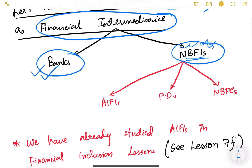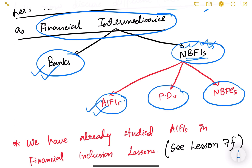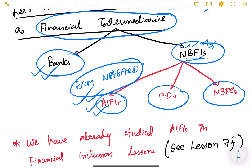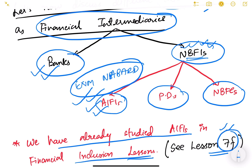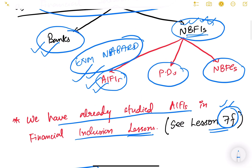NBFIs — non-banking financial institutions — are categorized into three types: All India Financial Institutions, then Primary Dealers, and NBFCs. All India Financial Institutions like EXIM, NABARD, SIDBI etc. we have already studied in lesson seven F under financial inclusion. For this video we will focus on Primary Dealers, and later we will study NBFCs — non-banking financial companies.